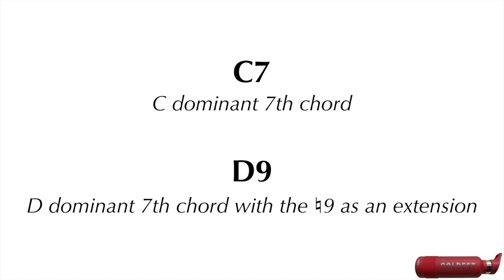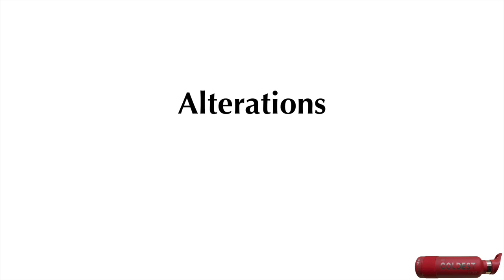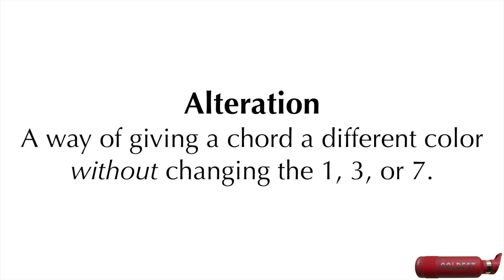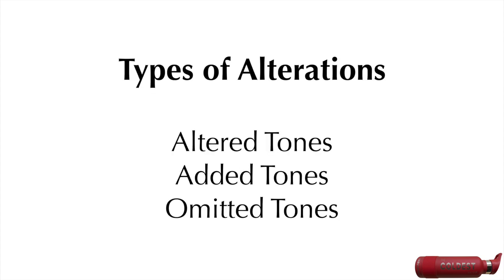The fourth feature of a chord is the alterations. An alteration is a way of giving a chord a different color without changing the 1, 3, or 7. There are three types of alterations: altered tones, added tones, and omitted tones.